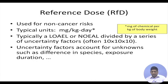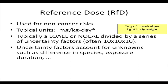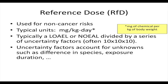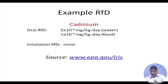For non-cancer risk, we use the term Reference Dose (RfD), typically expressed in milligrams per kilogram per day — milligrams of chemical per kilogram of body weight per day. We take NOAEL or LOAEL numbers from the dose-response curve and, since these come from animal studies, we extrapolate to humans using a series of uncertainty factors. These uncertainty factors account for unknowns such as differences in species, exposure duration, and so on.